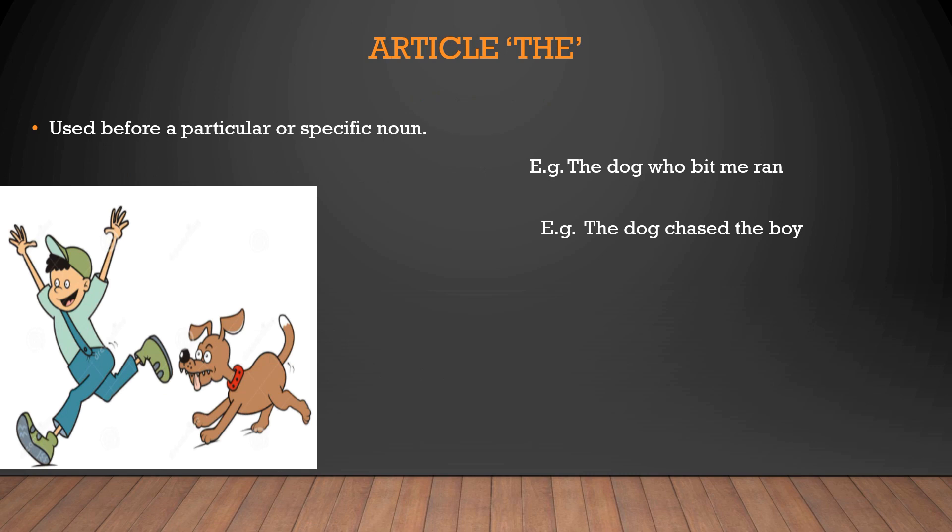Now we are moving on to the definite article called the. This is one of the important parts because this article the is used in the place of a specific noun. For example, the dog which bit me ran.